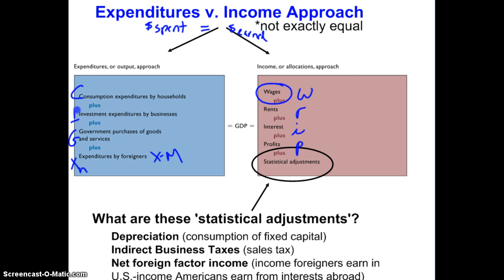What are these three statistical adjustments? They are depreciation, indirect business taxes, and net foreign factor income. The first one is depreciation. Depreciation is the loss of value that occurs to capital that you own. So if I own a computer, it's worth a certain amount, but over time it loses value. What businesses do is they don't want to wait until all their computers have lost all their value and then suddenly have a big bill to replace them. So instead, they set aside what's called a depreciation allowance — money that's essentially set aside as a business expenditure during the year, but it's not becoming income to anybody.